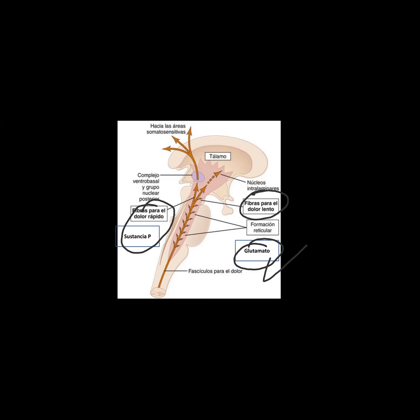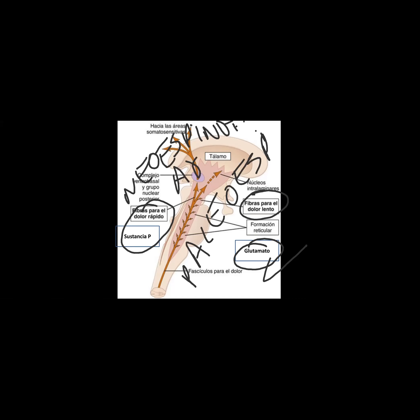Las dos vías de la vía espinotalámica son: el fascículo neoespinotalámico, que corresponde al dolor rápido, con fibras tipo A-delta que transmiten sensaciones de modalidad mecánica o térmica que inician el dolor. Y el fascículo paleoespinotalámico, que corresponde al dolor lento y crónico.